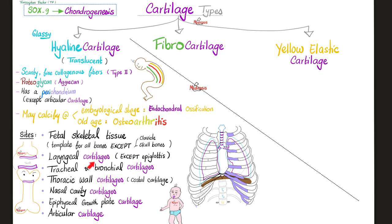Your laryngeal cartilages have hyaline cartilage, except the epiglottis — the epiglottis has elastic cartilage. The tracheal rings are hyaline cartilages. Bronchial cartilages are hyaline as well.